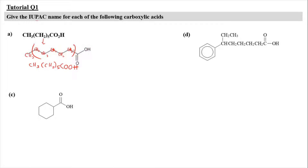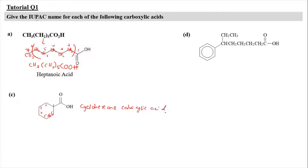When you get the structure, you need to count the number of carbons. You're going to start with carbon number 1, 2, 3, 4, 5, 6, 7. So you know that it is heptanoic acid. For structure B, you have a cyclohexane, and it is attached with the carboxylic acid group. What you're going to do is name the cyclic compound first — you know it is cyclohexane because it has 6 carbons — and then straight away put the carboxylic acid name. So you're going to have the name cyclohexane carboxylic acid, as simple as that.